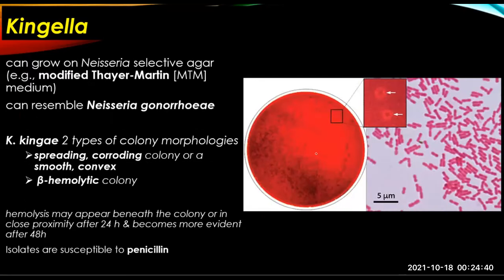Kingella organisms are nutritionally fastidious, oxidase positive, catalase negative, and are fermenters of glucose and other sugars — but with no gas production. They can grow on Neisseria selective agar like modified Thayer-Martin (MTM) medium and may be confused with Neisseria gonorrhoeae. There are two types of colony morphologies: spreading/corroding colony or smooth/convex. They are beta-hemolytic — this hemolysis may appear beneath the colony or nearby after 24 hours and becomes more evident after 48 hours. Isolates are susceptible to penicillin.